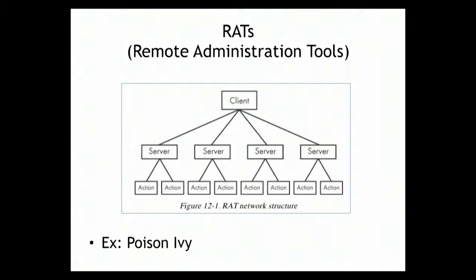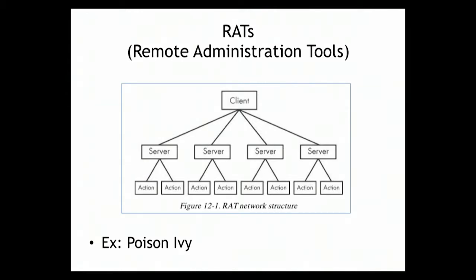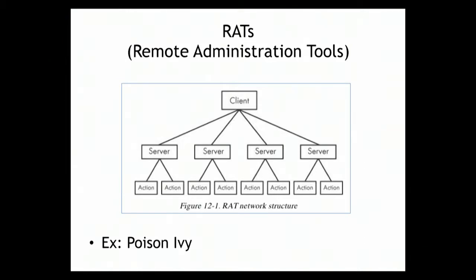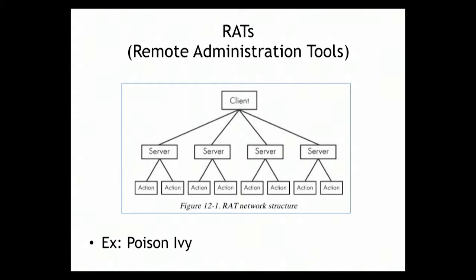Poison Ivy was a RAT that was commercially sold and constantly updated until the author got legal threats and quit supporting it. These things are not exactly illegal - you can buy them to monitor your kids' phones. Remote access tools have some degree of legal value; some people market them as tools for bosses to monitor employees' work computers, while others market them directly for criminal use. Whether it's a crime or not is very unclear.